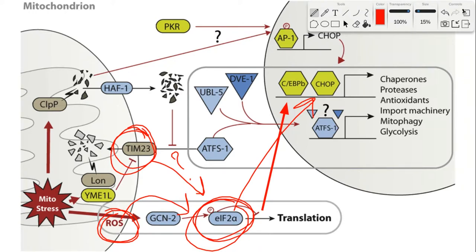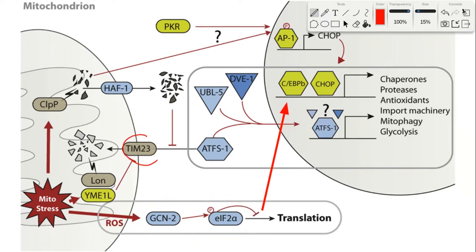The ATF4 and CHOP transcription factors are critical for the MT-UPR. In the next slide, we're going to see a prime example of how partially translocated proteins initiate signaling pathways, specifically mitophagy. The inhibition of TIM23 or the depolarization of mitochondria can cause protein stalling, which induces mitophagy.